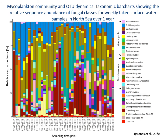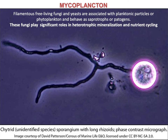Mycoplankton communities are a diverse and ubiquitous component of marine environments with strong roles in ocean biogeochemical cycling. Their abundance, structures and function are strongly linked with environmental factors and primary production. Data shown in the graph suggest strong horizontal and vertical spatial patterns of their abundance and diversity. More in detail, mycoplankton encompasses filamentous free-living fungi and yeasts that are associated with planktonic particles or phytoplankton and that can behave as saprotrophs or pathogens.